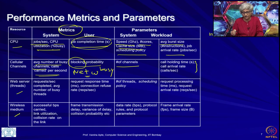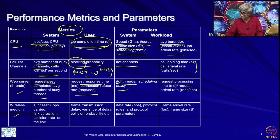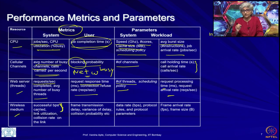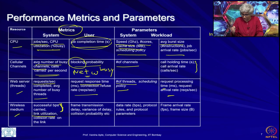For web server threads, the metrics are similar: requests completed per second, average number of busy threads, request response time, and connection refuse rate. Parameters are number of threads, scheduling policy, arrival rate, and how much time each request takes. For the wireless medium, an important performance metric is how many bits per second the Wi-Fi channel is actually successfully carrying. Also important is what fraction of time it is being used and the collision rate.